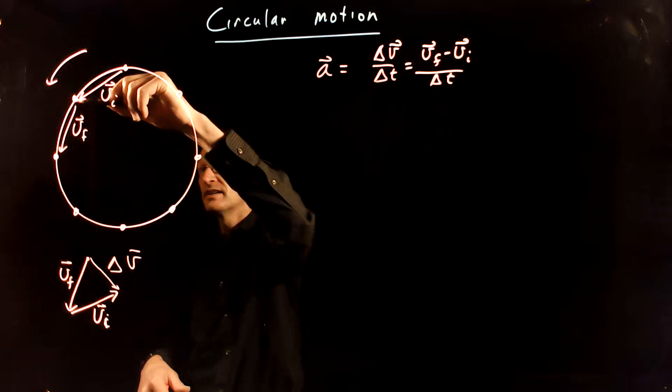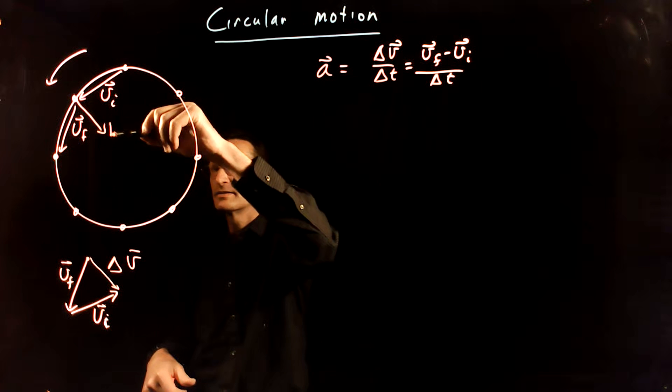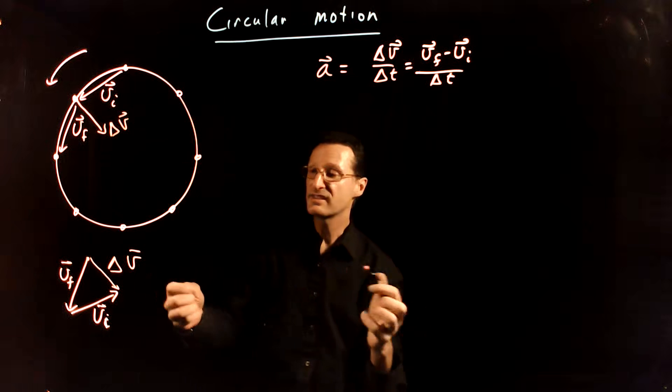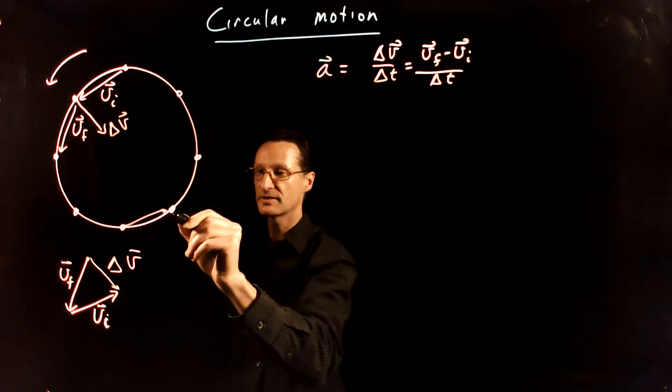And that's going to be along this direction. And so at this point, the change in velocity vector delta v points that direction. And we can do this again for several other parts of the circle.